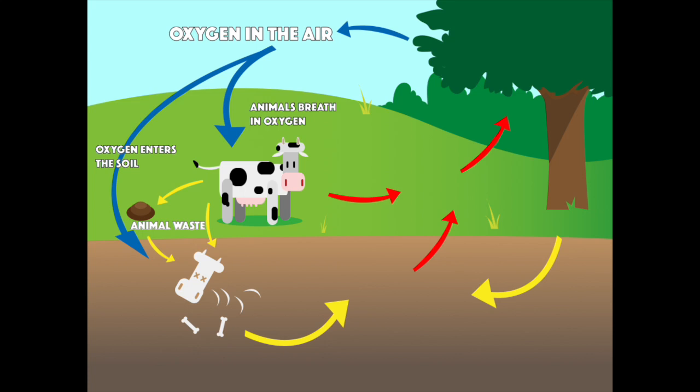Animals also produce waste. And when an animal dies, its body decays and breaks down. As well, plants also die and decay.